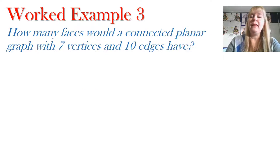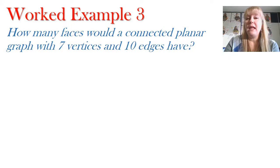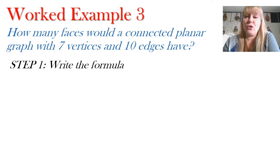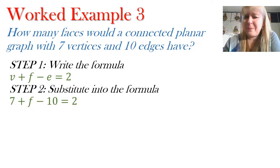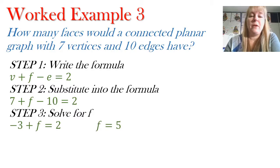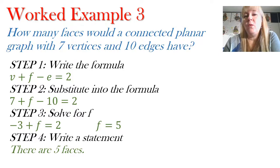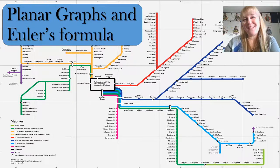My third and final worked example looks at applications of Euler's formula. For example: how many faces would a connected planar graph have if there were seven vertices and ten edges? My steps are to write the formula first, then state the variables and substitute: V = 7, E = 10. Solving for F, I find that F equals five — there are five faces. Always finish by writing a statement: there are five faces. That's all we have time for today — I hope you like and subscribe to the channel. Stay tuned for more videos on networks and matrices!